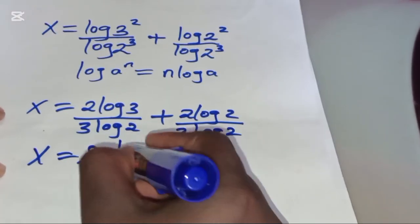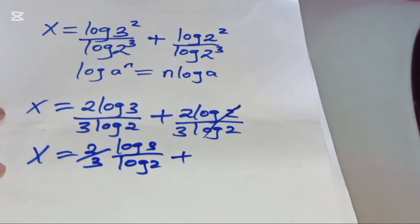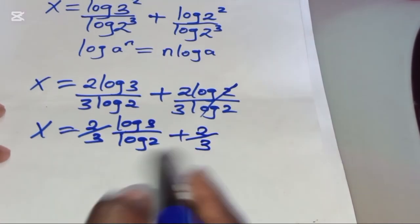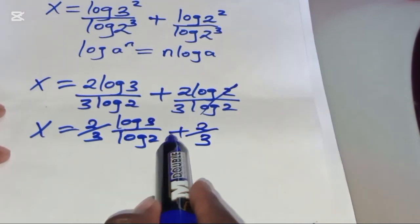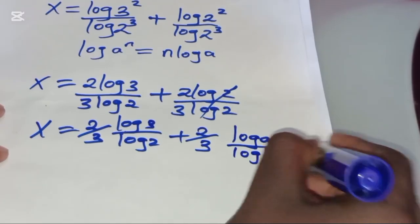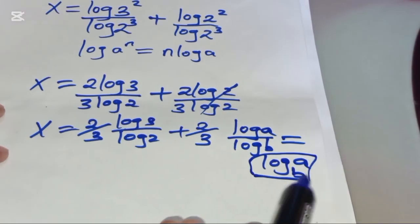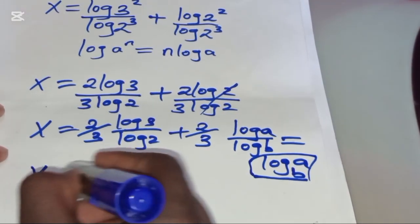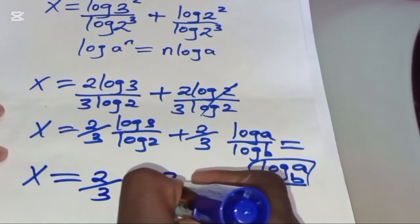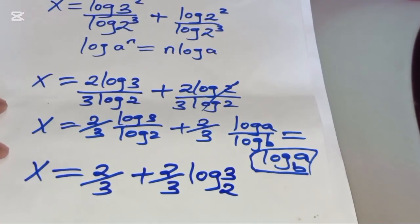Now, log 3 divided by log 2 is in the form of log A divided by log B, which equals log A to base B. In the second term, log 2 and log 2 simplify, leaving 2 over 3. Applying this change-of-base property, x is equal to 2 over 3 times log 3 to base 2, plus 2 over 3. So the final value of x is 2 over 3 plus 2 over 3 times log 3 to base 2.